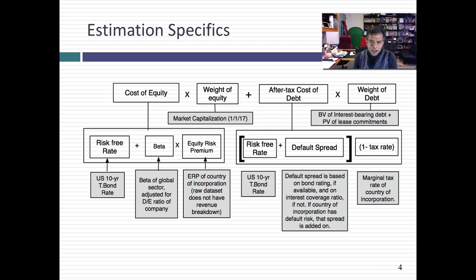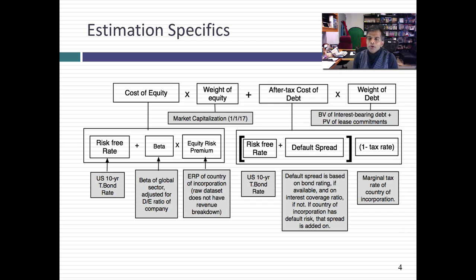To get the cost of debt, I start with the same U.S. dollar risk-free rate and add a default spread. If I can find a rating for your company — a bond rating from S&P — I use that rating to estimate a default spread. If I cannot find a bond rating, then I use your interest coverage ratio to estimate a rating and a default spread. In addition, if you're a company in a risky country — say an Argentine or Indian company — I add the default spread for the country as well, arguing that you carry both burdens on your shoulder. I also use the marginal tax rate of the country in which the company is incorporated to come up with the after-tax cost of debt.